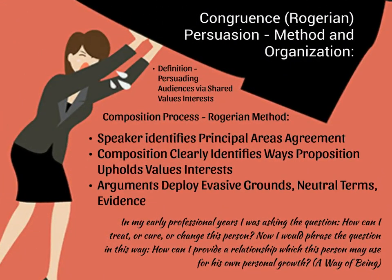Now let's look at something called the Rogerian Method of Persuasion, or sometimes called the Congruence Method, as opposed to the Rational Appeals Method. We often think of persuasion purely as an us-versus-them paradigm. But as Carl Rogers, the creator of the Rogerian Method — who worked as a psychotherapist — states: 'In my early professional years, I was asking the question, how can I treat or cure or change this person? Now I would phrase the question, how can I provide a relationship which this person may use for their own personal growth?' If we were to define the Congruence Method, it would be persuading audiences via shared values and interests. Instead of trying to slowly move them in the direction of your proposition, you show them how your proposition helps them become more of themselves and reinforces their identity more than their current behavior.